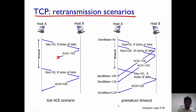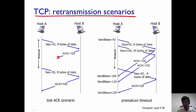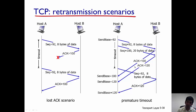The second scenario is premature timeout. Let's assume A and B are once again connected by TCP. A first sends a segment to B with sequence number 92 and 8 bytes of data. A has a lot of data to send to B, so it does not wait for the acknowledgement to come back. It sends a second segment with sequence number 100 and 20 bytes of data.